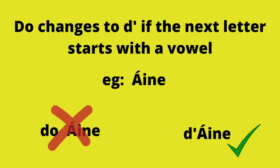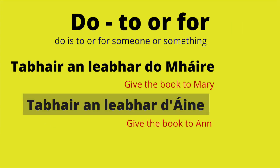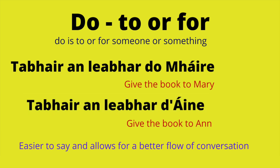A quick grammar tip: 'do' changes to 'd'' apostrophe if the next word starts with a vowel. So for example, 'tabhair an leabhar d'Áine' — give the book to Anne. This is done to make it easier to say and to keep the speech pattern smooth.